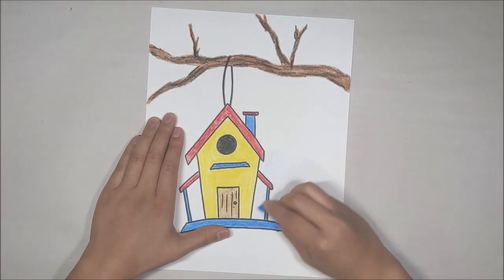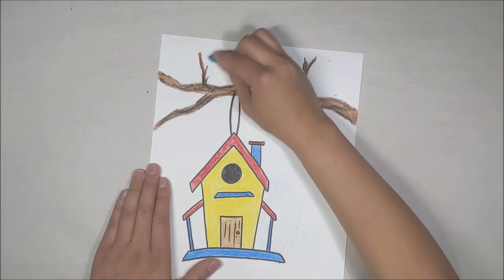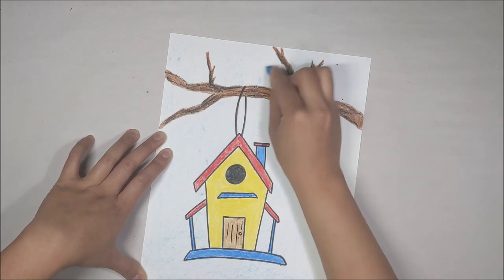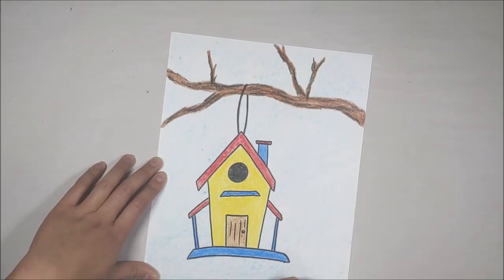To add the background, I'm using a light blue crayon, laying it down and rubbing in the color. Using the rubbing method creates a lighter color, which is what we want.